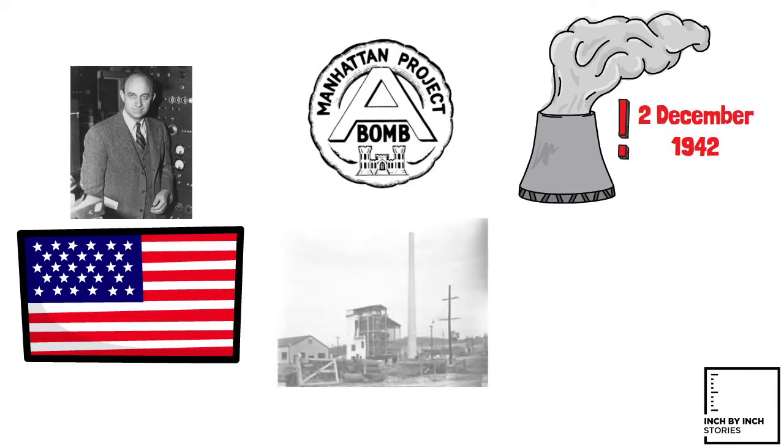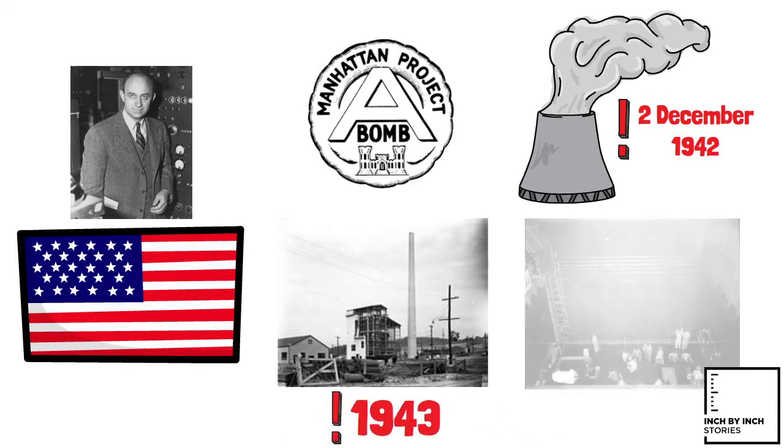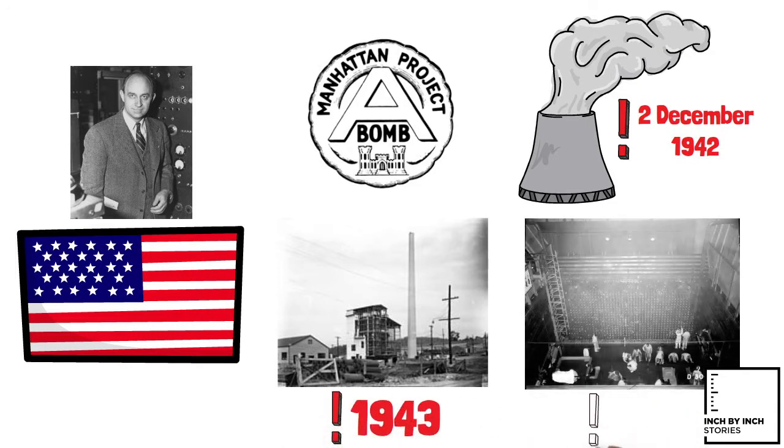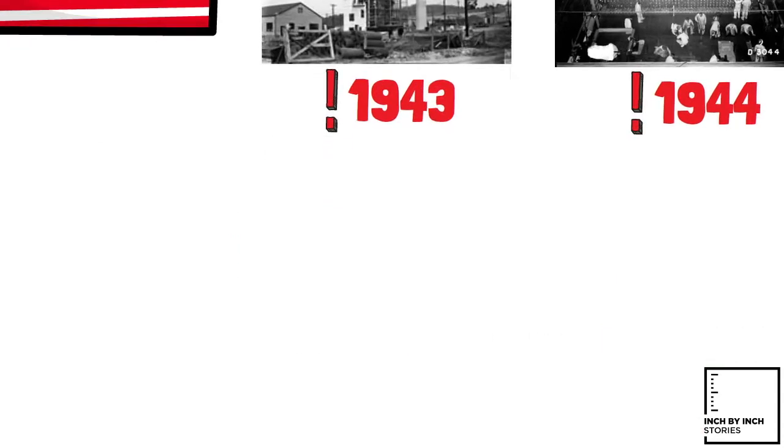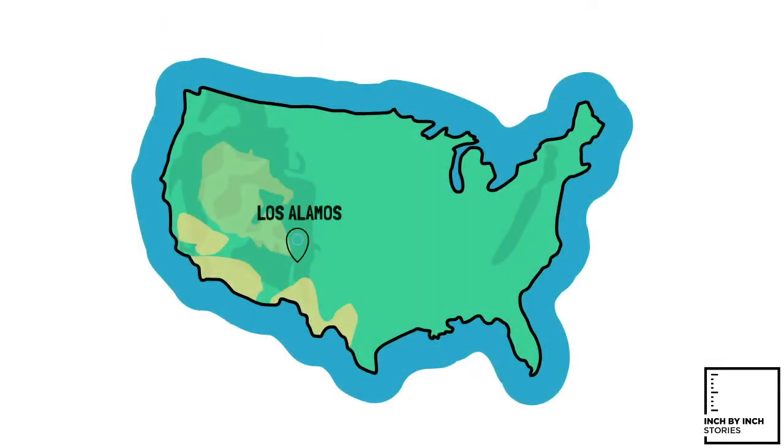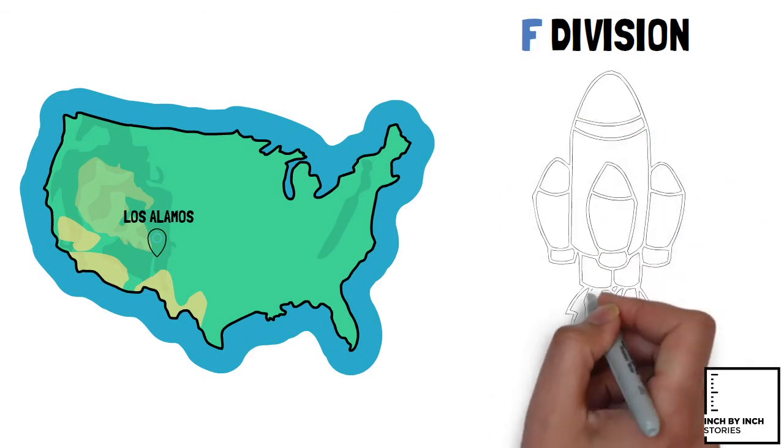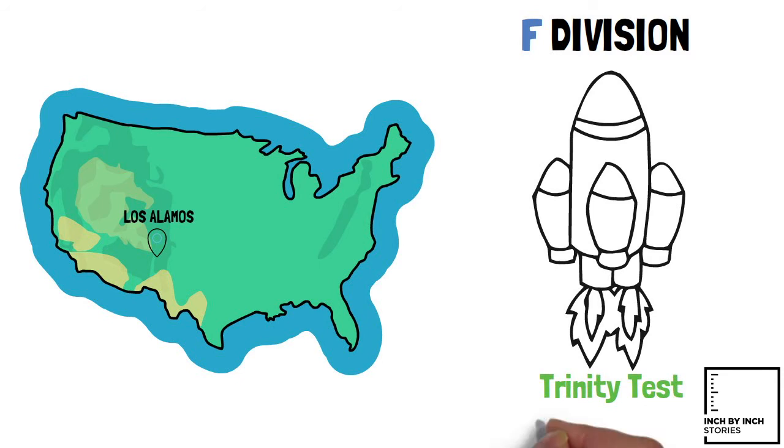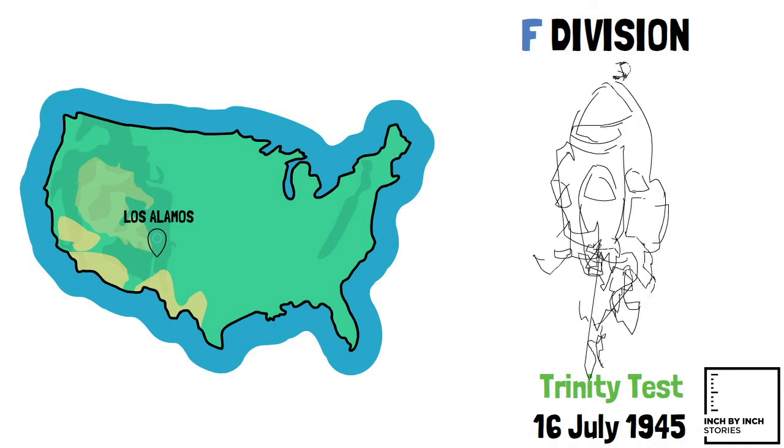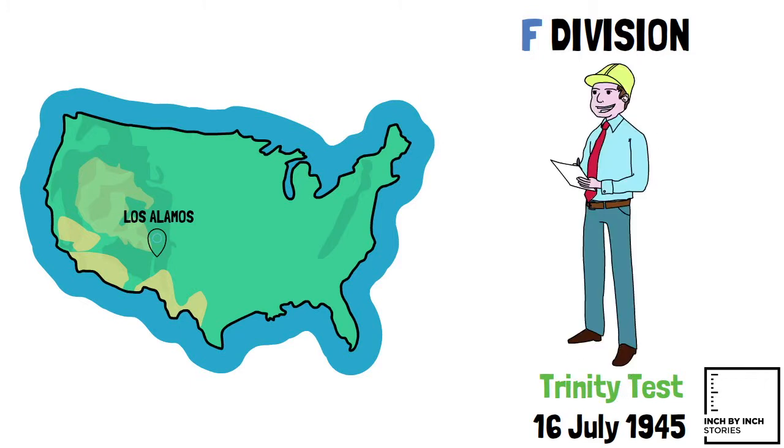He was on hand when the X-10 graphite reactor at Oak Ridge, Tennessee, went critical in 1943, and when the B reactor at the Hanford site did so the next year. At Los Alamos, he headed the F-Division, part of which worked on Edward Teller's thermonuclear super bomb. He was present at the Trinity Test on July 16, 1945, where he used his Fermi method to estimate the bomb's yield.